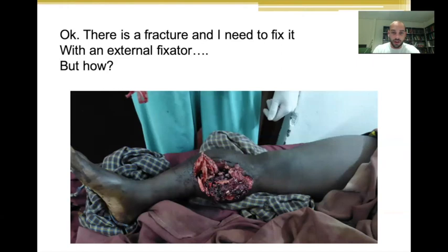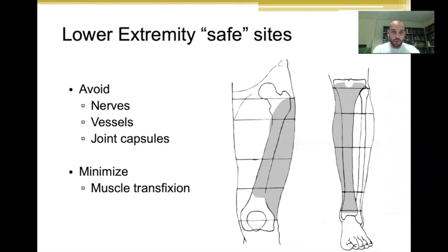First of all, you need to be aware of the safe zones when you insert pins for external fixation — you need to be sure you don't cause any more damage to nerves or vessels and that you do not insert the pins into joint capsules. Safe sites can be found in most readily available books. The femur on the lateral side and the tibia on the medial side have safe zones where pins can be inserted. It is also of great importance not to damage any muscle.